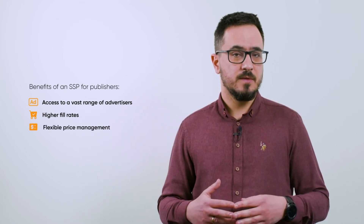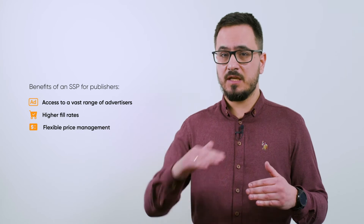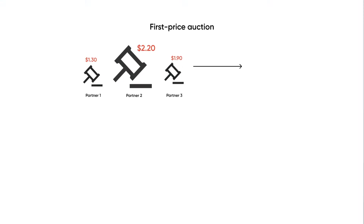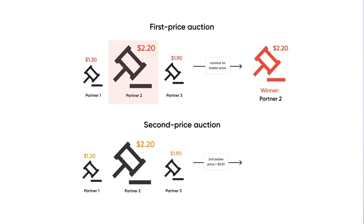SSPs offer flexible price management, giving publishers the flexibility to determine their floor price. Advertisers won't be able to bid less than the set floor price, so the slot will always be sold for the appropriate value. For higher monetization revenues, publishers can utilize header bidding, which always implies first-price RTB auctions. Here, the highest bidder pays the exact CPM of their bid, in contrast to a second-price auction where the winner pays a CPM one cent higher than the second bid. First-price auctions are way more beneficial for publishers and exclude the usage of bidding multipliers.